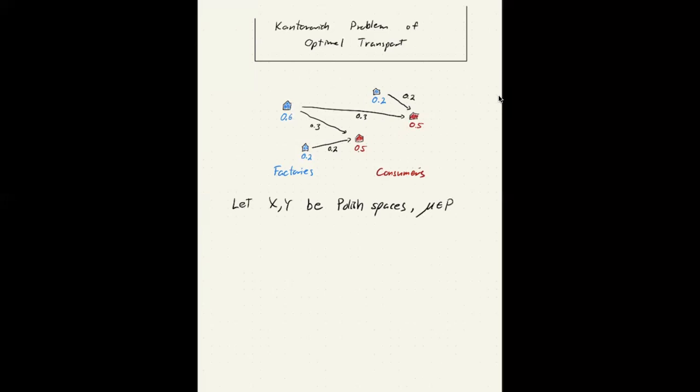μ, the source measure, which in this case here is the factory. And ν, the target measure, measure on Y, which is the consumers.